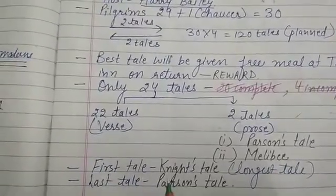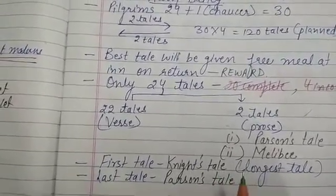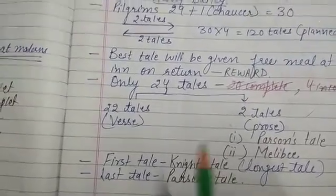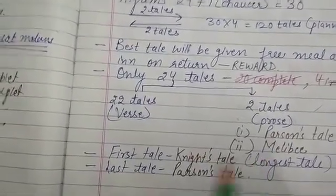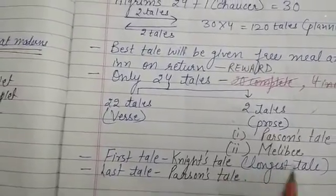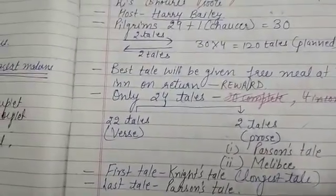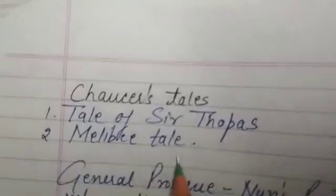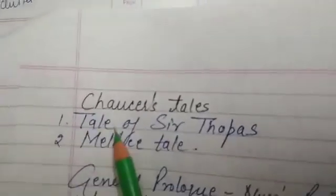The first tale told is the Knight's Tale, which is also the longest tale. The last tale is the Parson's Tale. Chaucer himself told 2 tales: the Tale of Sir Thopas and Melibee's Tale.